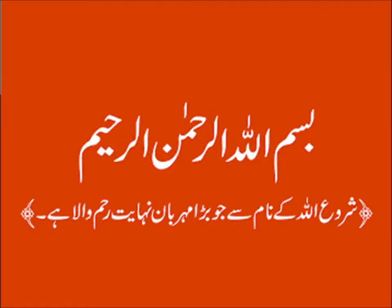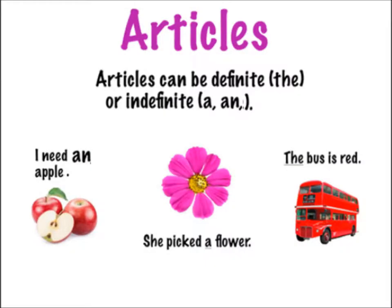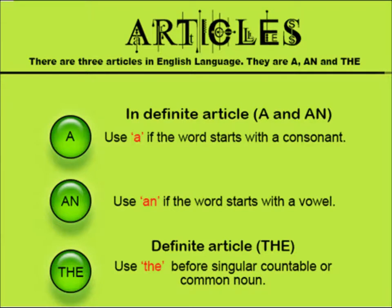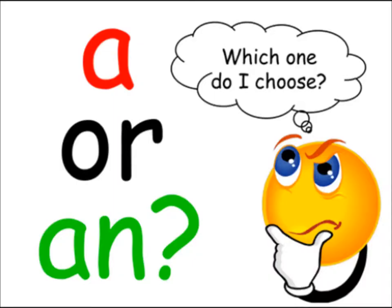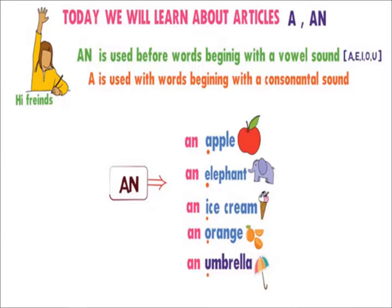Assalamualaikum warahmatullahi wabarakatuh. Which one do I choose? हम कुछ examples देखते हैं। Five vowels हैं: a, e, i, o, u — और बाकी अक्षर जो हैं वो consonants हैं। तो 'an' जो है वो vowels से पहले आएगा।